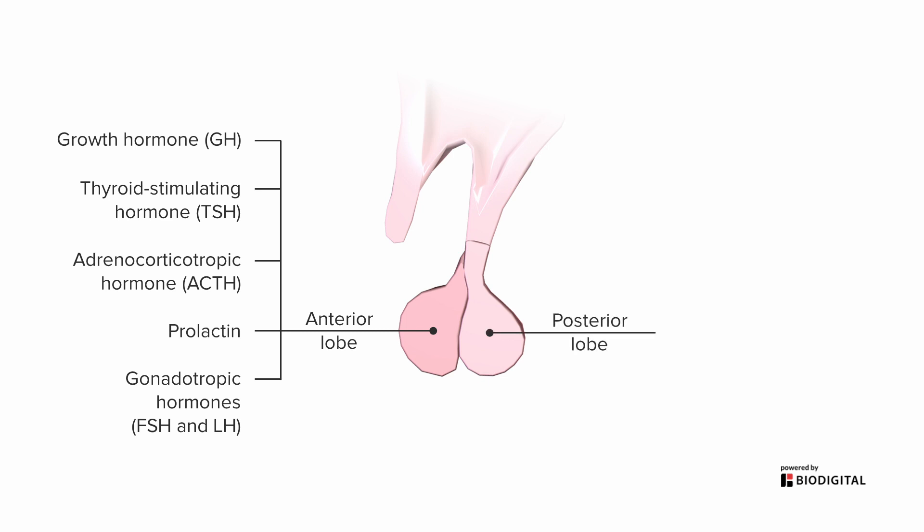The posterior lobe, on the other hand, only has vasopressin — also called antidiuretic hormone — and oxytocin.